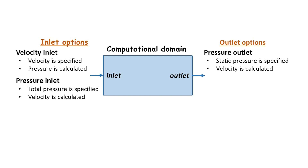Specifying both the velocity and pressure would lead to mathematical over-specification, since these two flow properties are coupled in the equations of motion. When we specify the velocity, the pressure will adjust itself to match the rest of the flow field as the CFD solution converges, such that the prescribed velocity boundary conditions are satisfied. Similarly, when we prescribe the pressure, the velocity will adjust itself during iterations to satisfy the pressure.